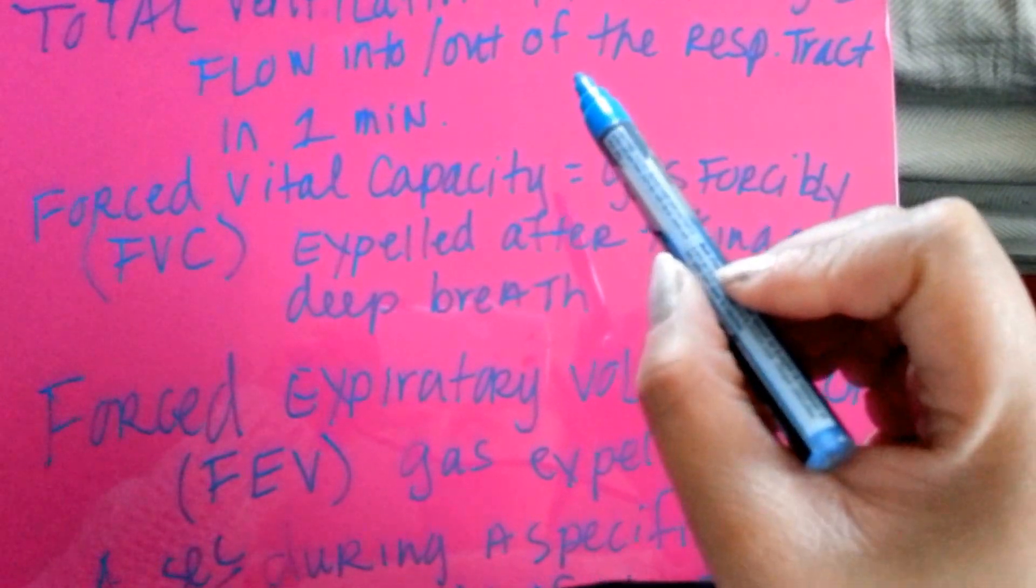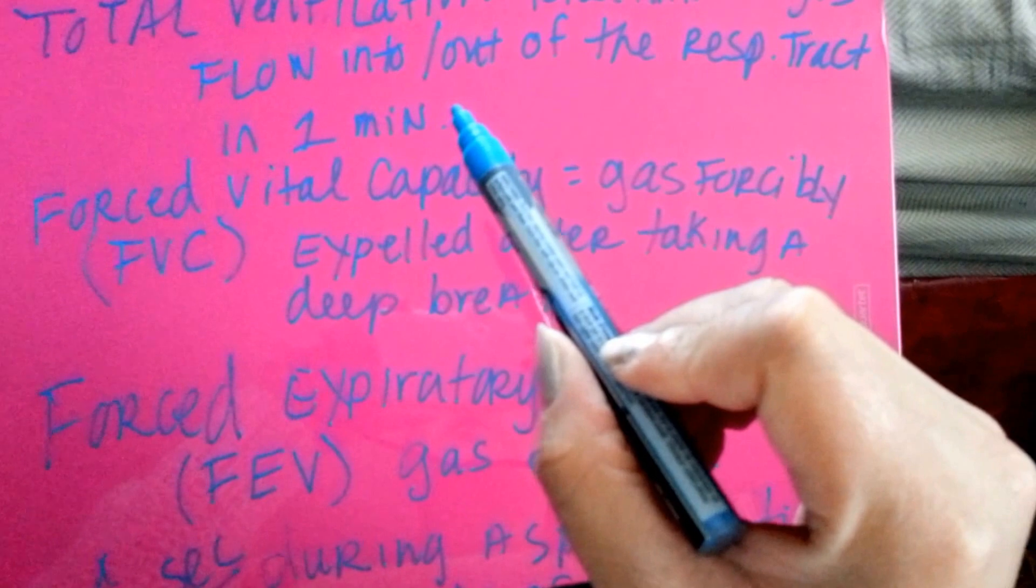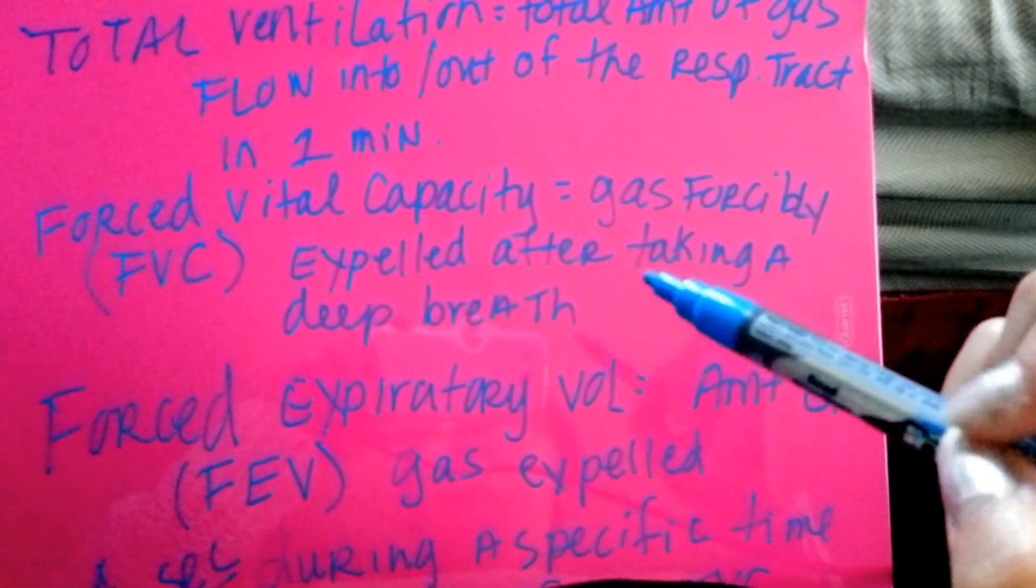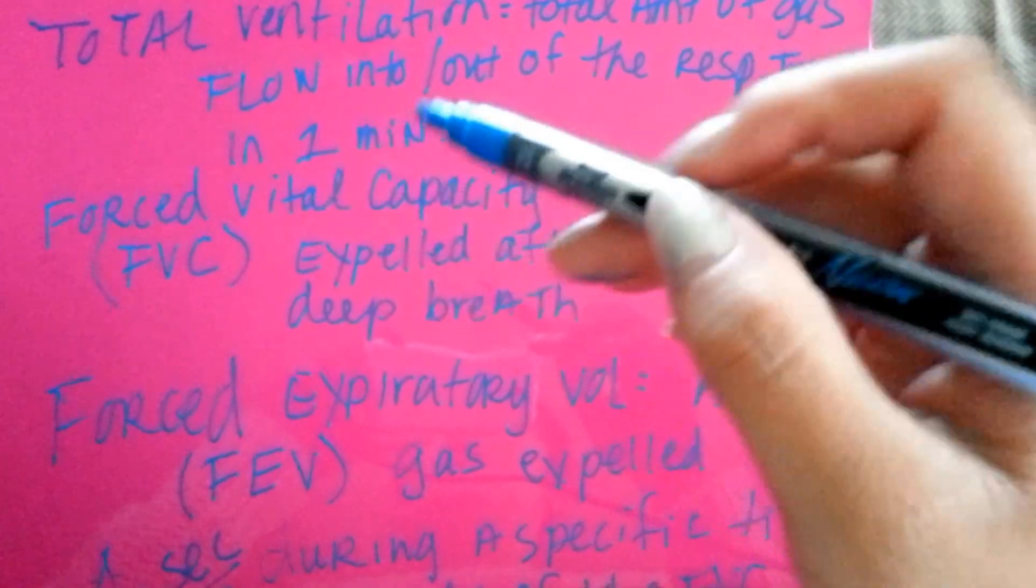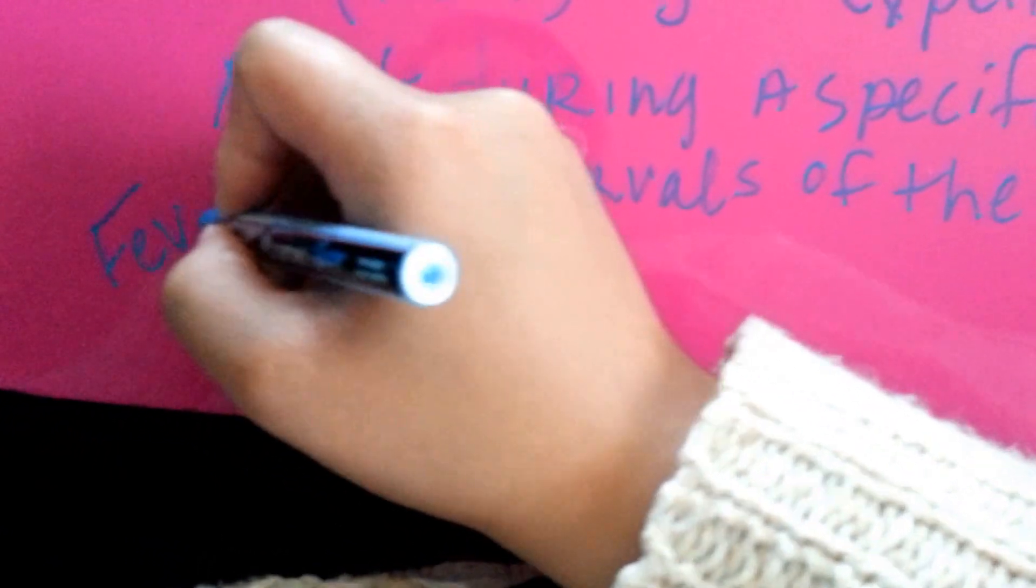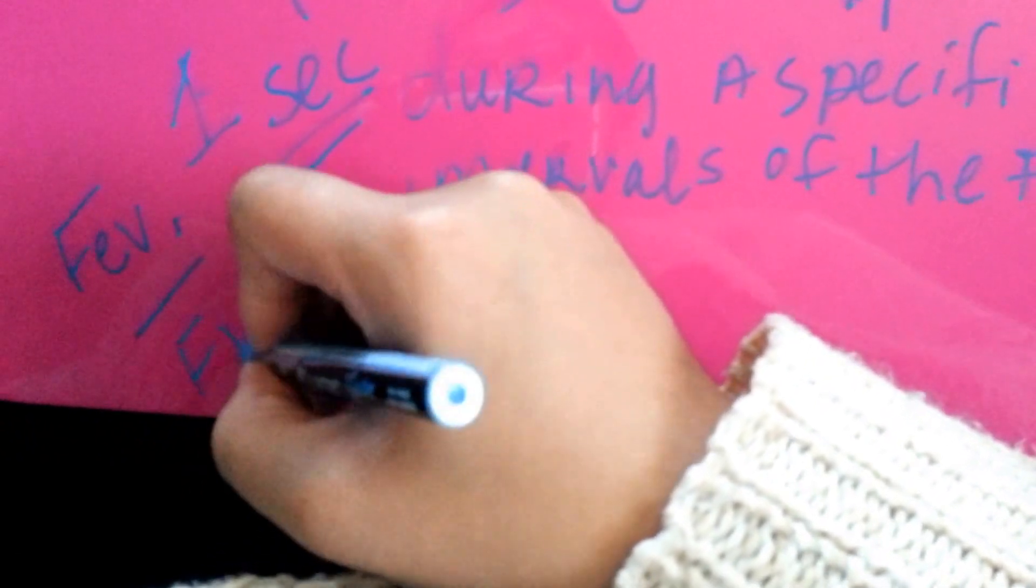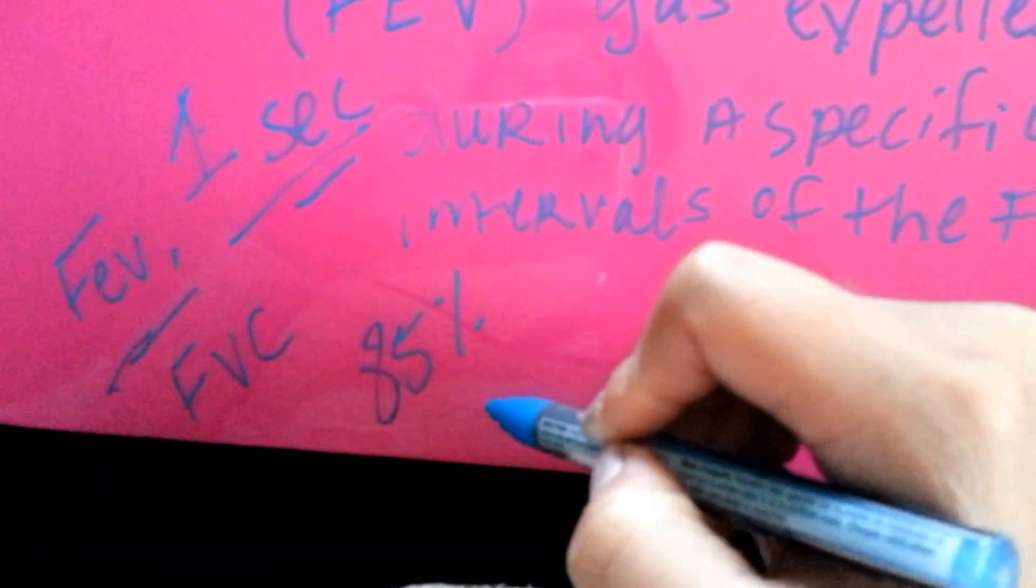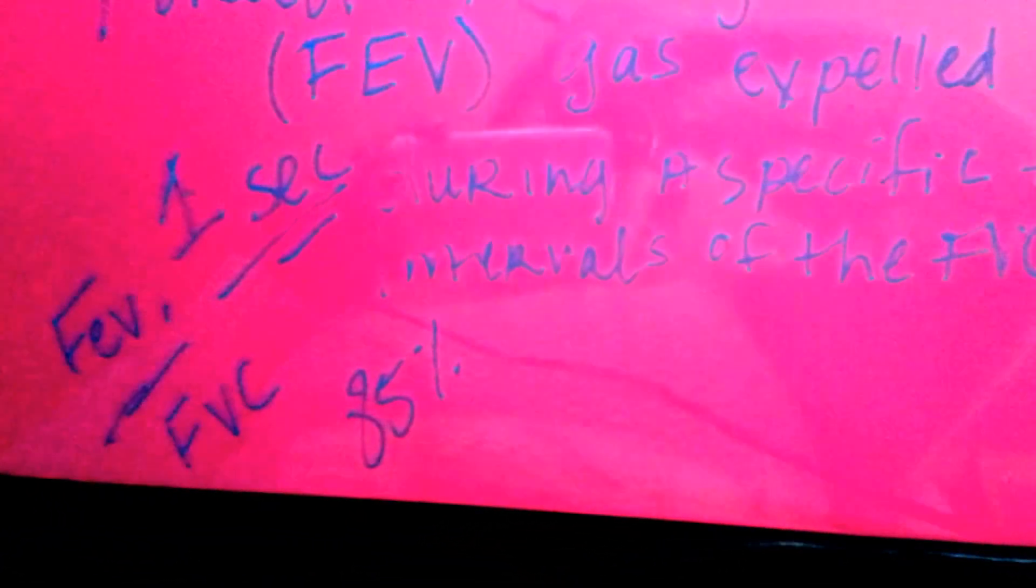The total ventilation is total amount of gas flow into or out of the respiratory tract in one minute. I'll teach you how to find that. We basically do the FEV divided by FVC. Normally that should be 85% normal. Let me pause this video and I'll draw a graph to explain it better.